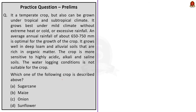Question 3 describes a crop: it is a temperate crop but also grown under tropical and subtropical climates; it grows best in mild climate without extreme heat or cold; average annual rainfall of 650 to 750 mm is optimal; it grows well in deep loam and alluvial soil rich in organic matter; it is most sensitive to highly acidic, alkaline, and saline soils; and waterlogging conditions are not suitable. The correct answer is option C: onion.